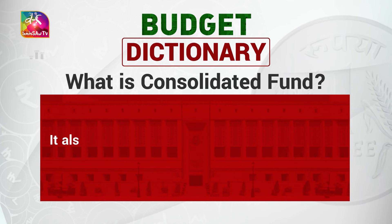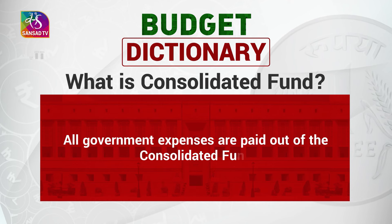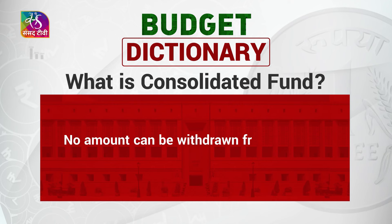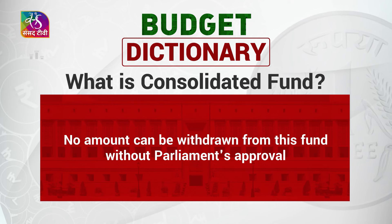All government expenses are paid out of the Consolidated Fund. No amount can be withdrawn from this fund without Parliament's approval.